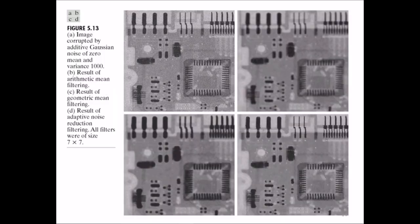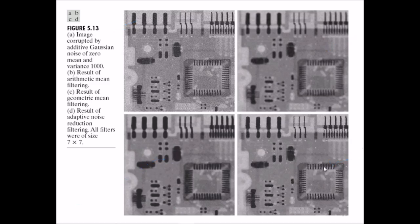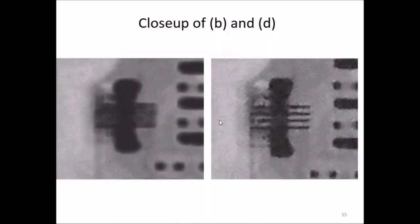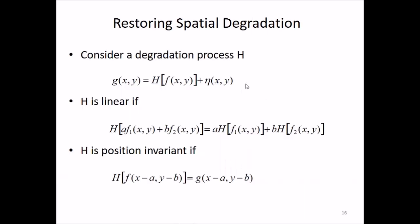Here is an example: an image corrupted by additive Gaussian noise with zero mean and variance 1000. The results show arithmetic mean filtering, geometric mean filtering, and adaptive noise reduction filtering with a 7×7 filter. The boundary areas are well taken care of, as visible in the blow-up of that area.